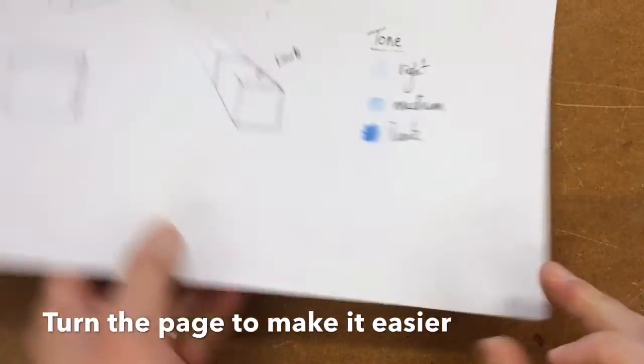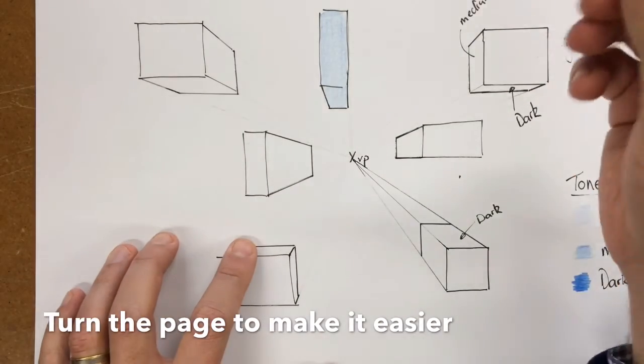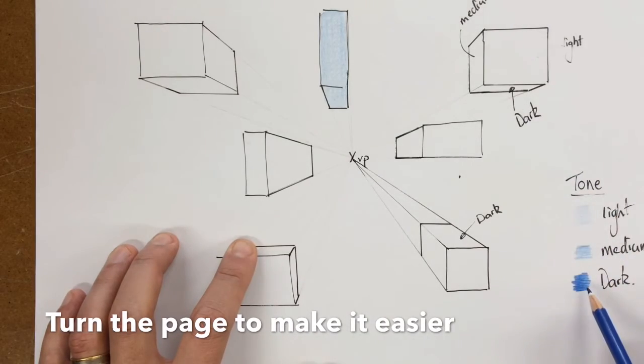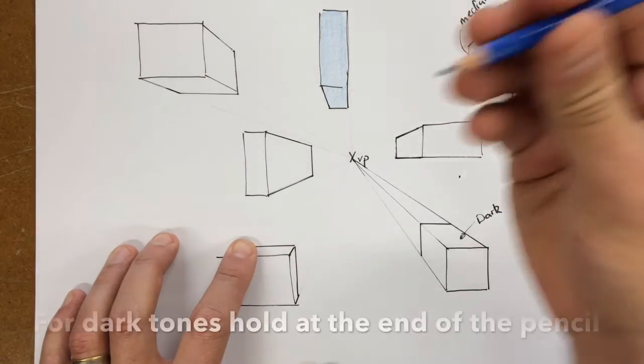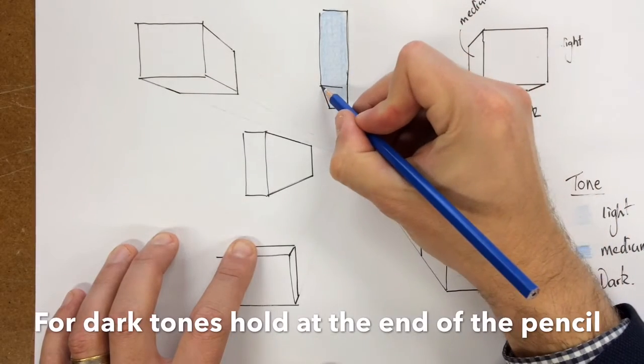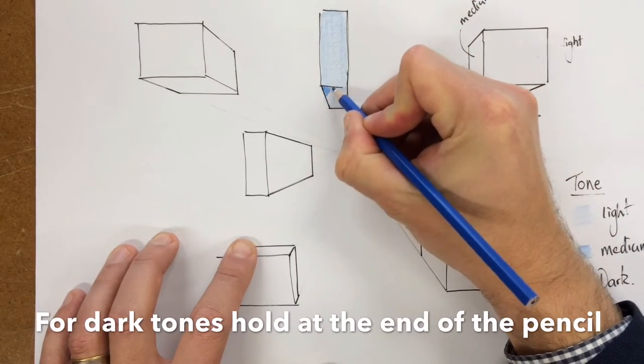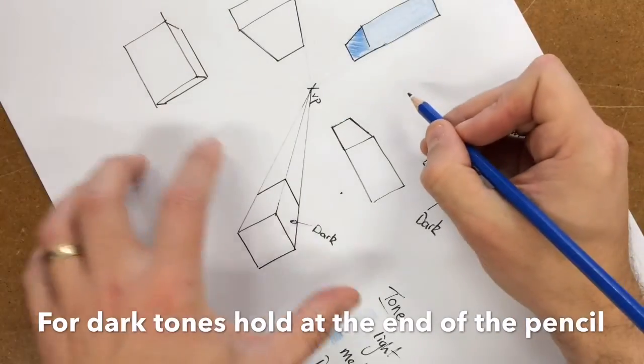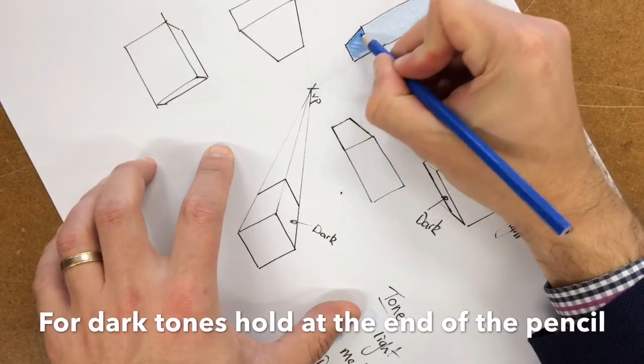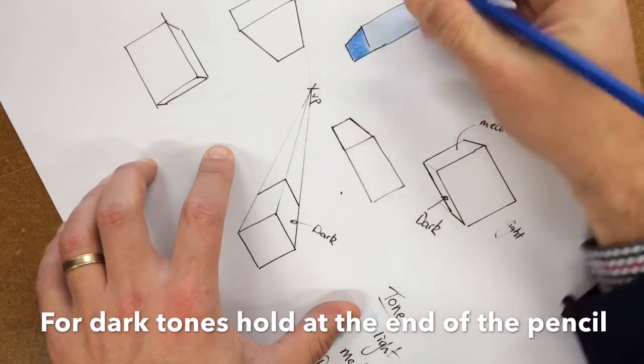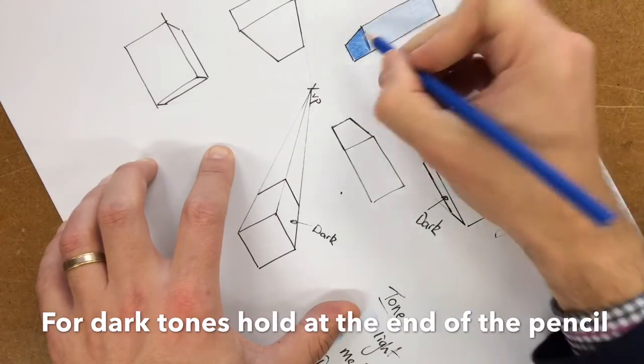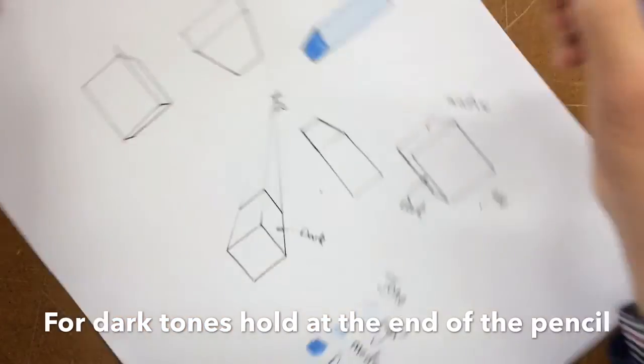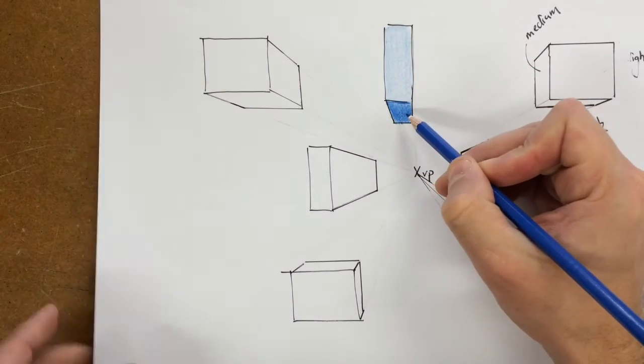Turn the page. We're now going to do the bottom, which in this case must be dark. Dark must be dark there. We're going to hold it down the bottom of the pencil. Turn the page, trying to make sure there are no gaps in your coloring. So, there we go. We now have a light and a dark tone.